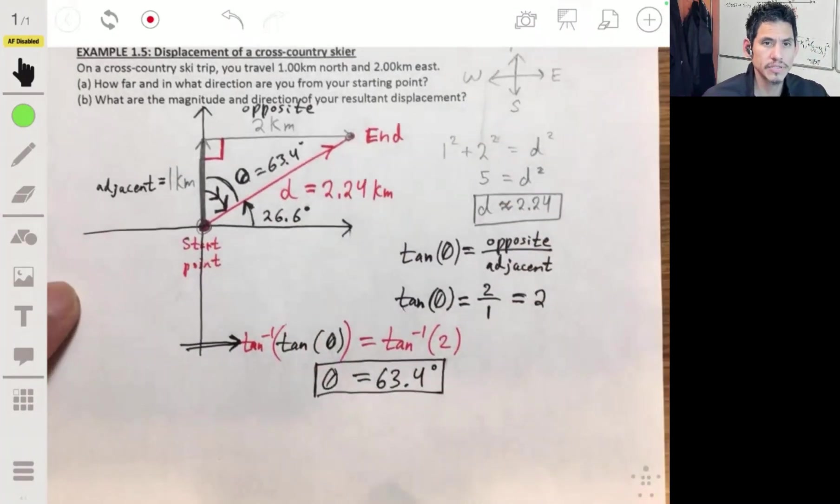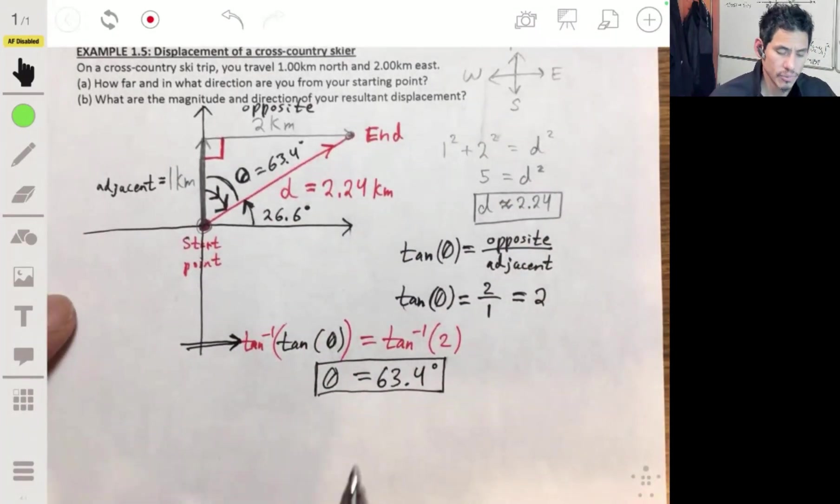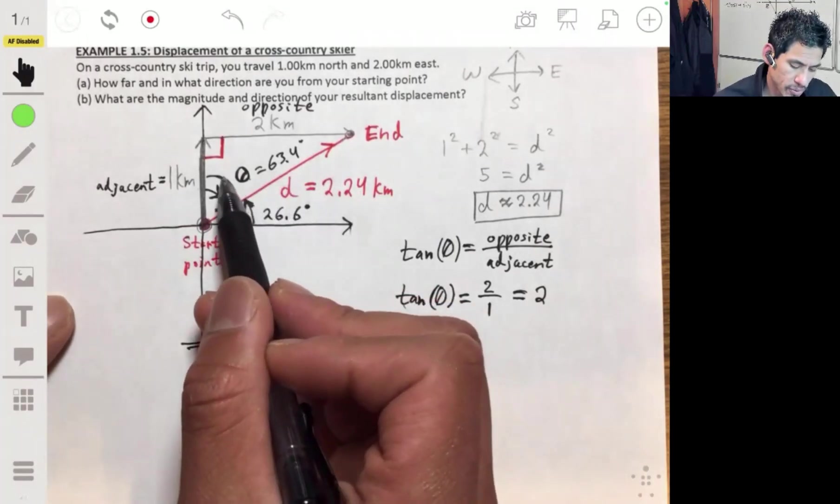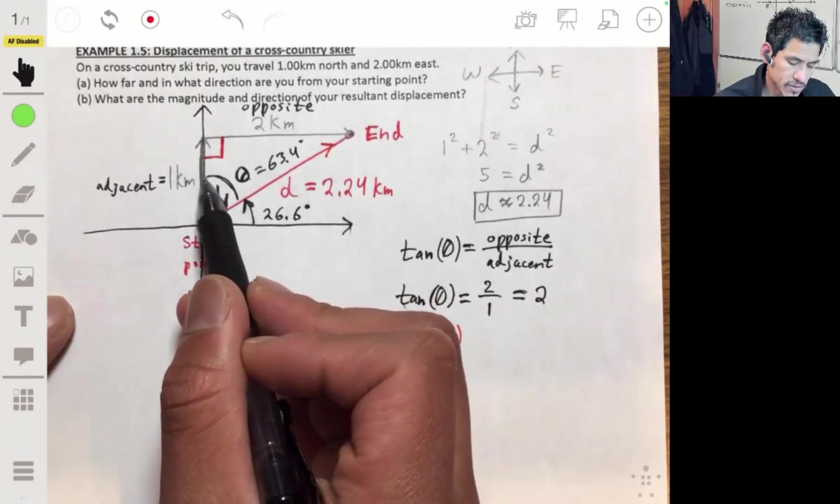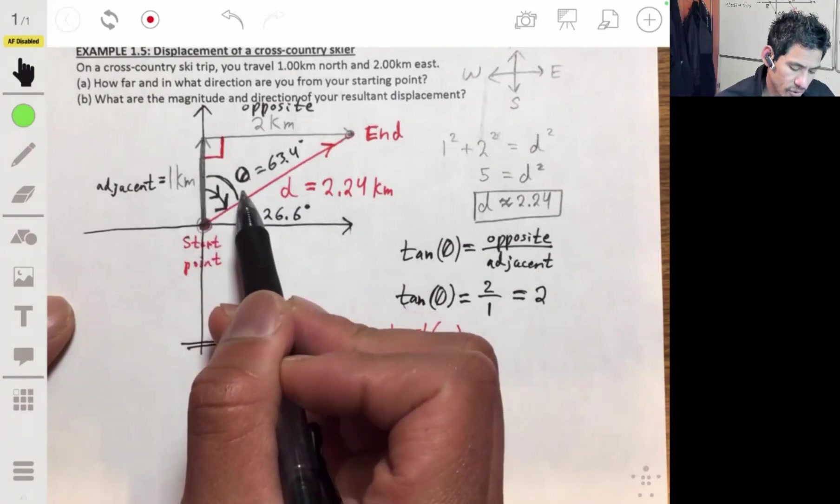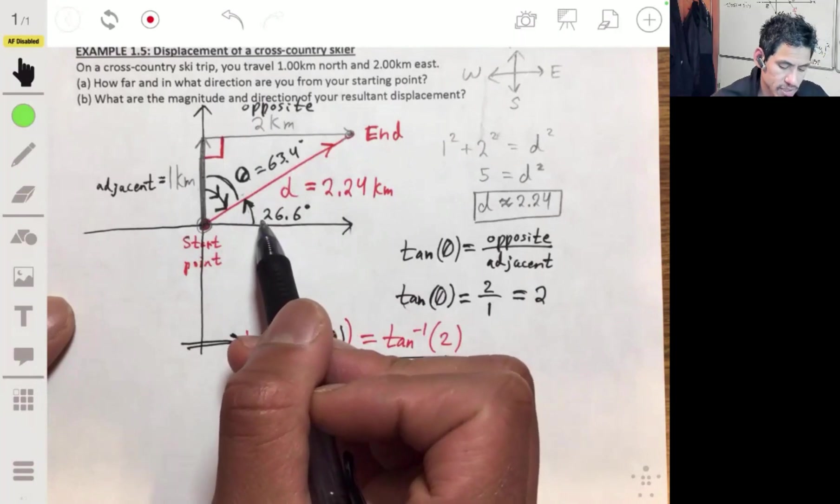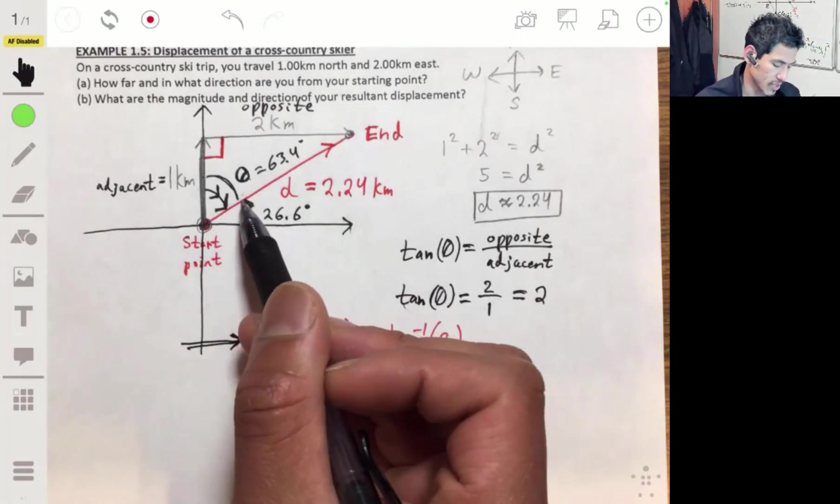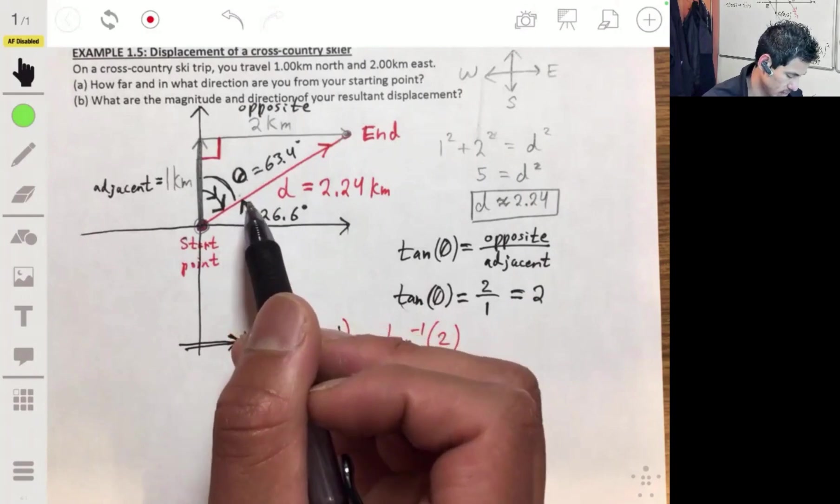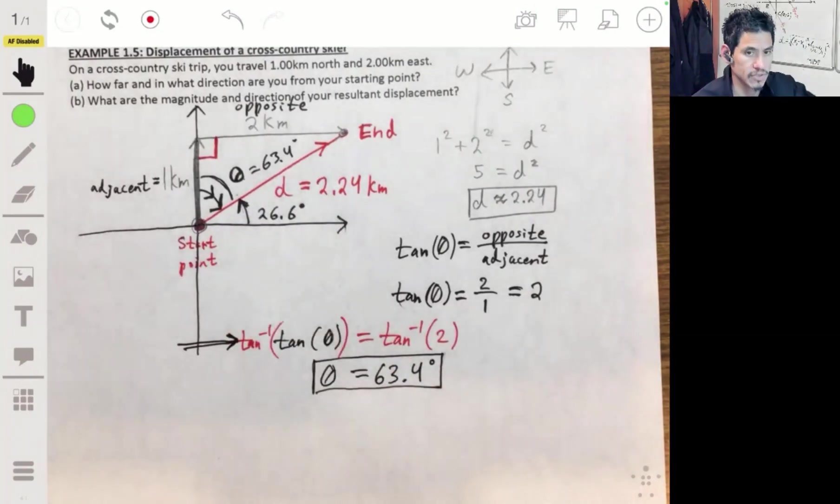So there's two ways to talk about direction here. We can say that your direction is 63.4 degrees east of north. Or you can say 26.6 degrees north of east. They're both going to be correct.